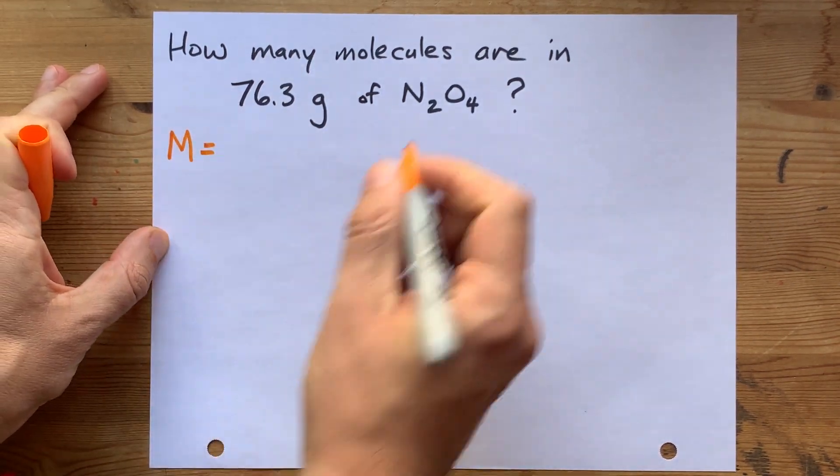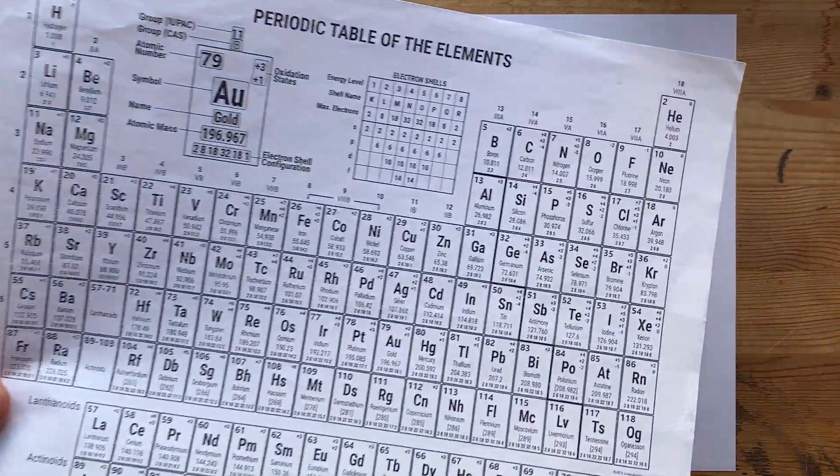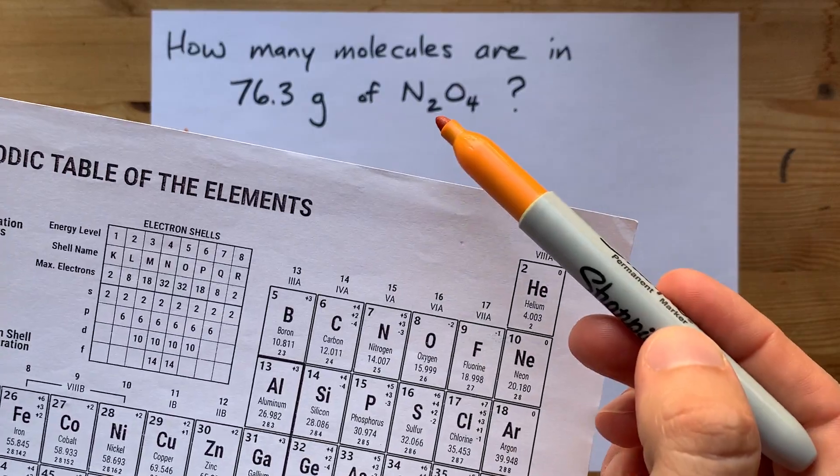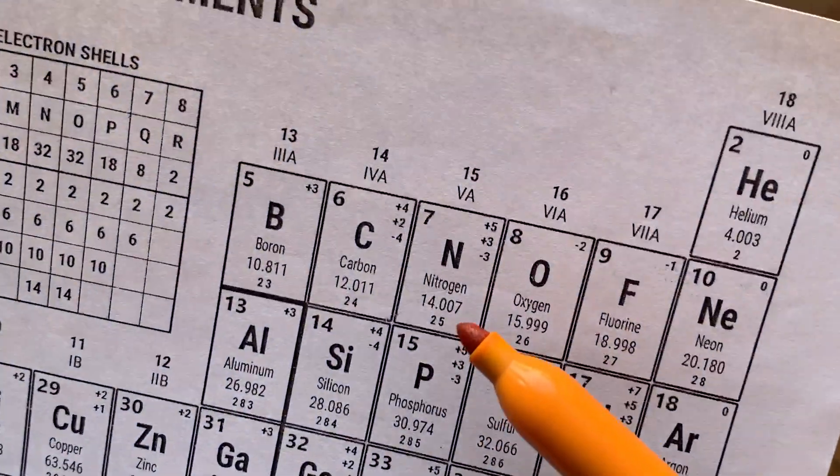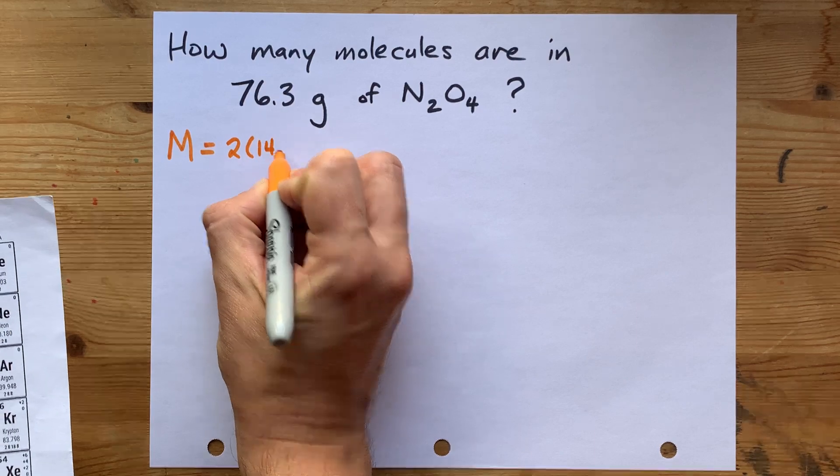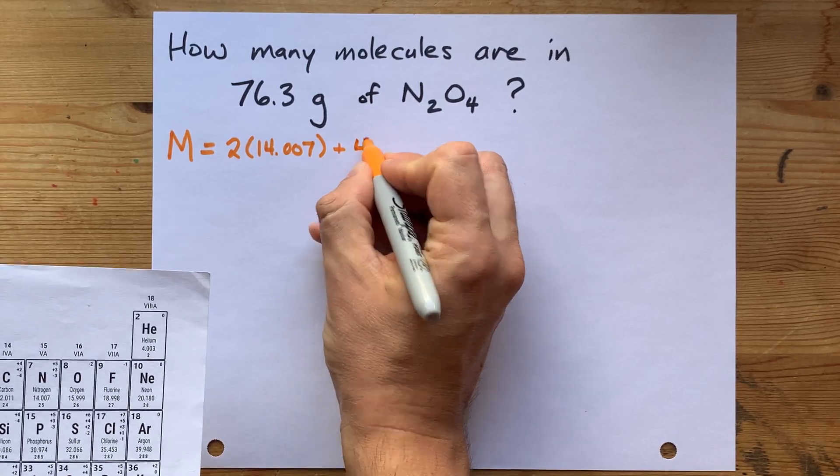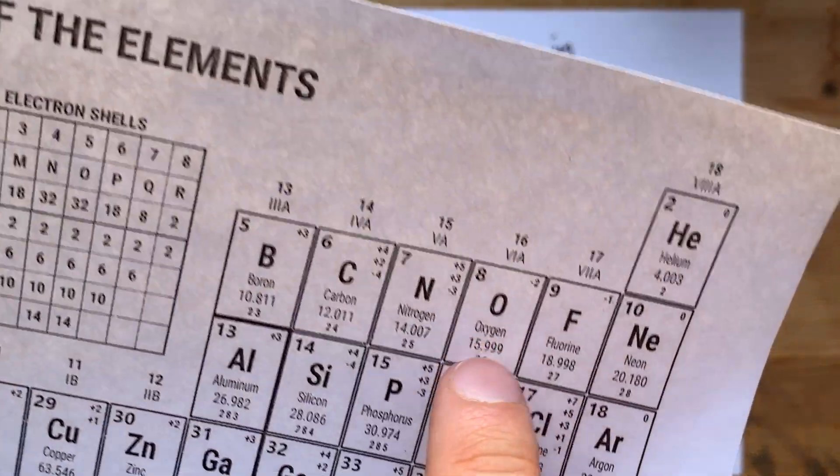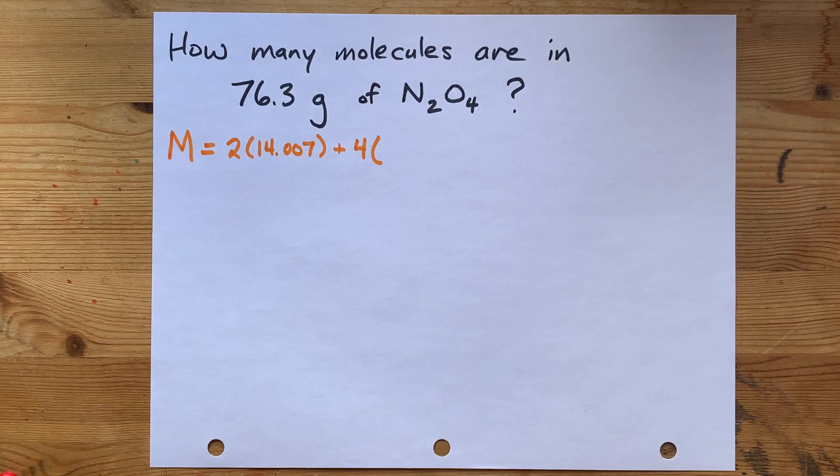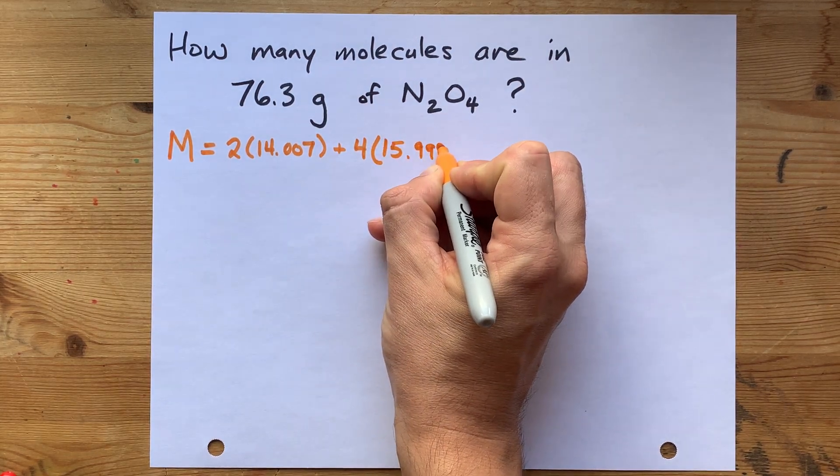We do need the molar mass of this compound. You get that by adding up the atomic masses of all the elements that make it up. N2O4, we've got two Ns. That's two of these 14.007s. And four oxygens. That's four of these 15.999s. Good thing I have a calculator here.